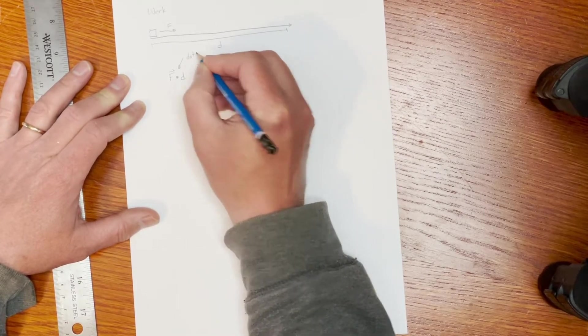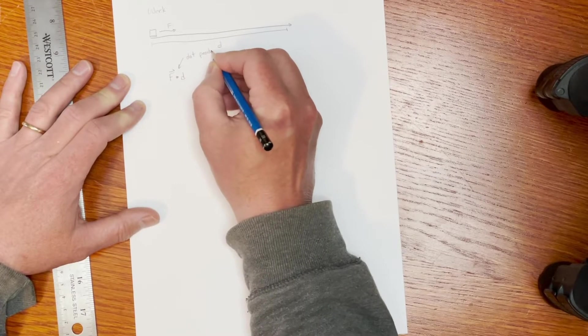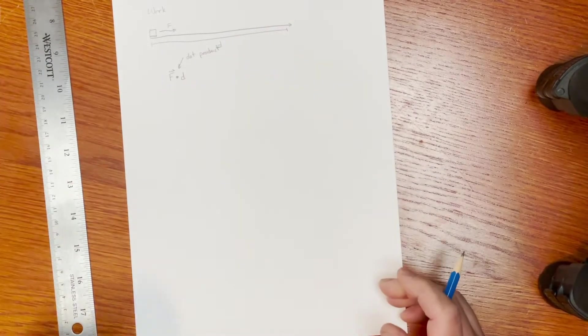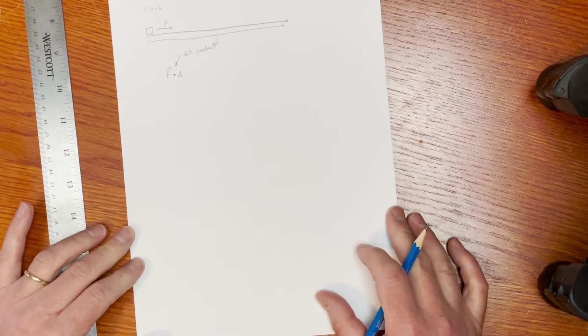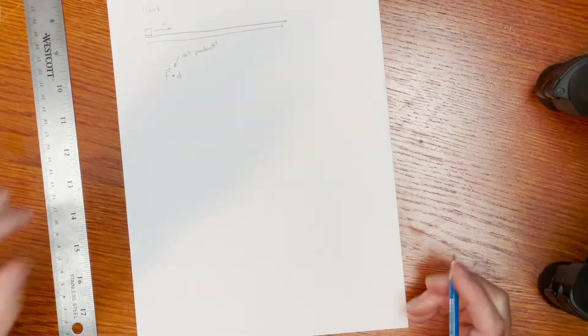Now this is the dot product. And that dot product comes about because it depends on whether or not the force is aligned with the direction you're pushing it or not.